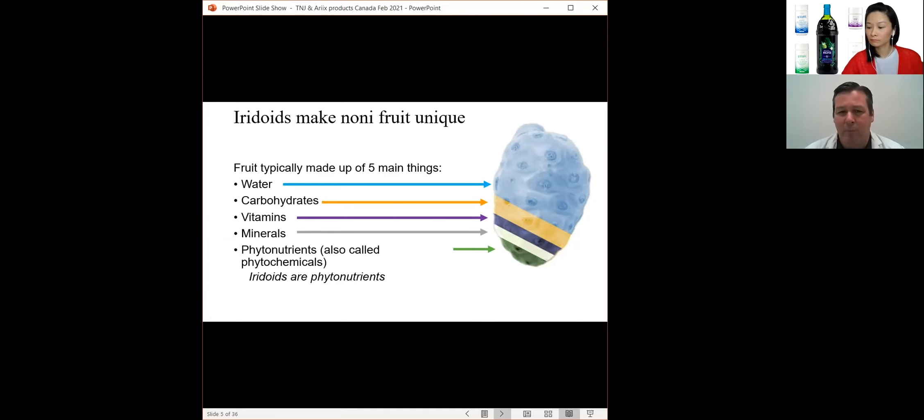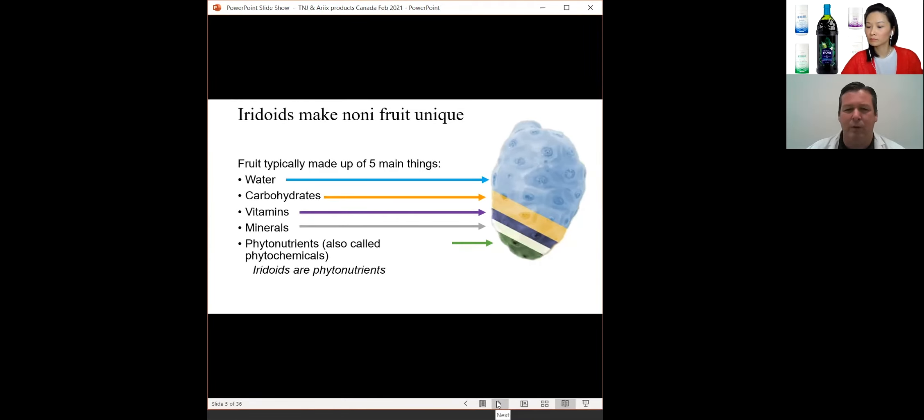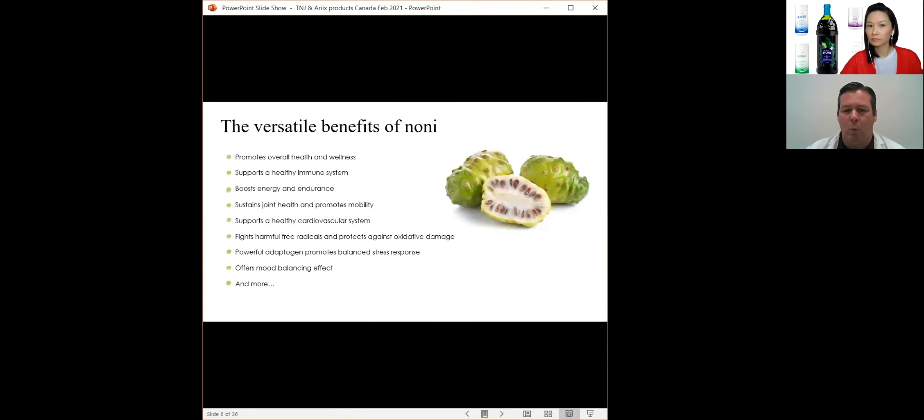Phytonutrients you may have heard of before are flavonoids, very common, widely spread across all different kinds of fruits. Noni has flavonoids. But the iridoids are another group of phytonutrients that are not common to fruits. You don't find it in banana, orange, grape, acai, maki berry, apples. They don't have iridoids. Noni is very unique in this respect. And so that's what really makes Noni unique and different, and also the reason why it had such broad versatile benefits.